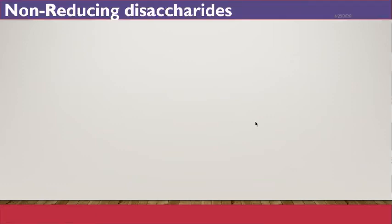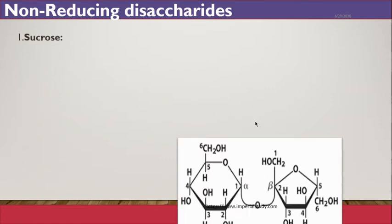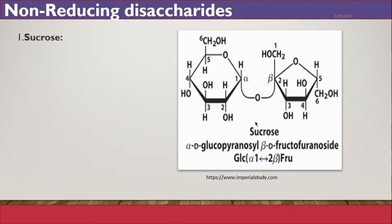Now we will see non-reducing disaccharides. The best example of a non-reducing disaccharide is sucrose. This is the structure of sucrose. Sucrose is one of the common heterodisaccharides which on hydrolysis gives an equimolar mixture of D-glucose and D-fructose.